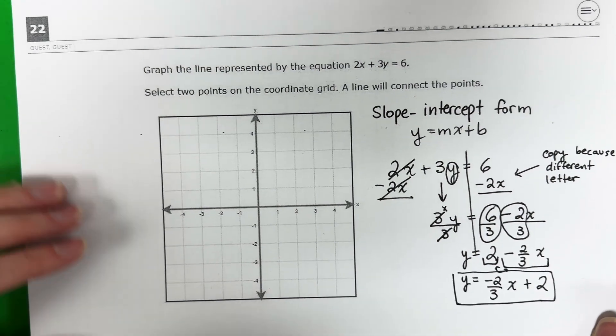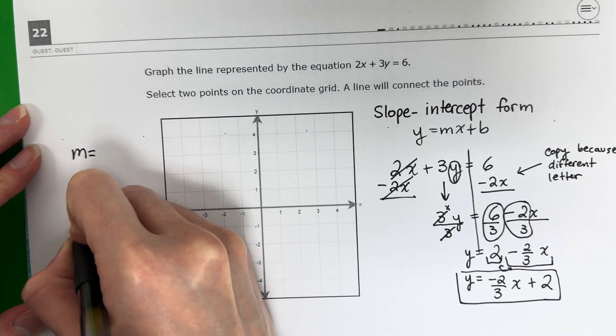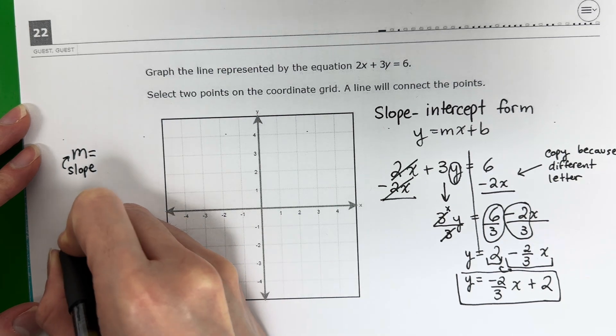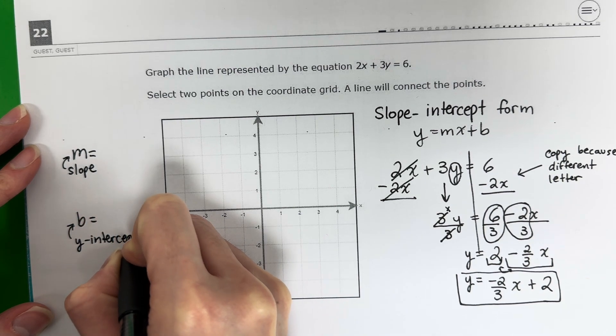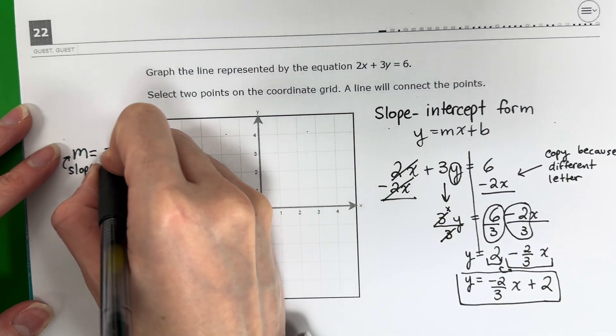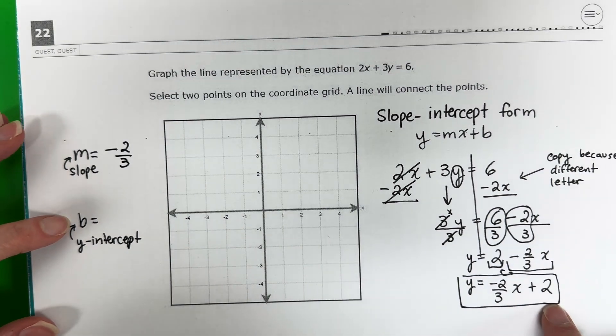Not finished. Now we got to graph it. Let's go ahead and do our m and b. M is the slope or the rate of change. B is the y intercept. M is the number with the x. That would be negative 2 thirds. B has no x. That would be 2.